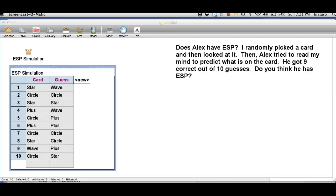Let's use Fathom to help us figure this out. Notice I created a collection with two attributes, one called card and one called guess.